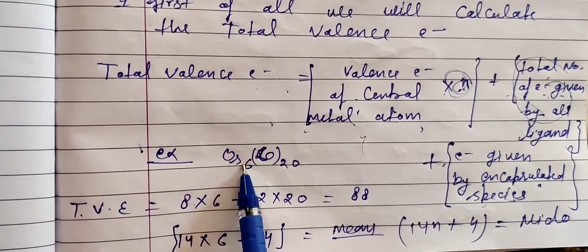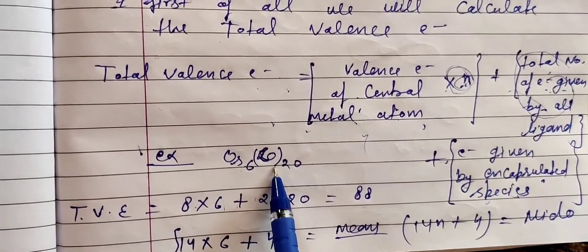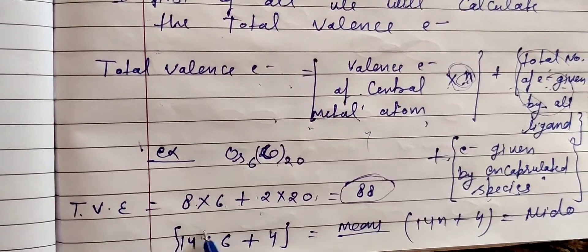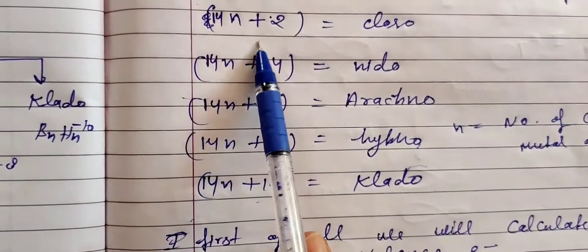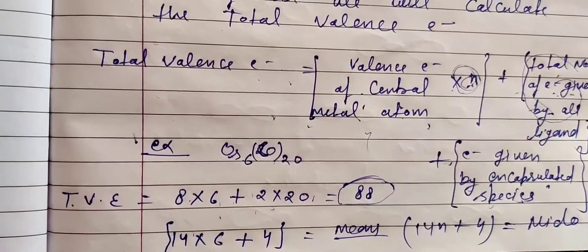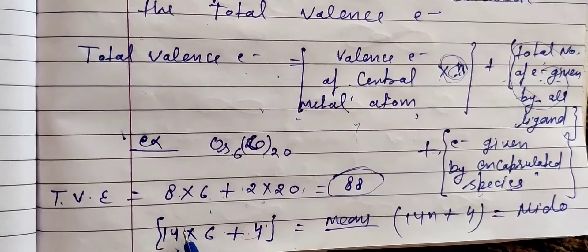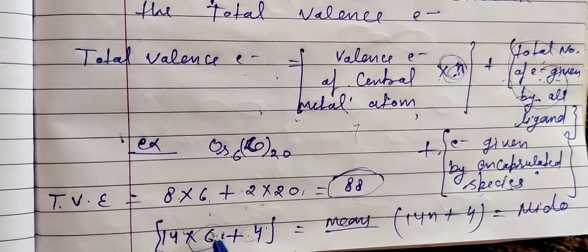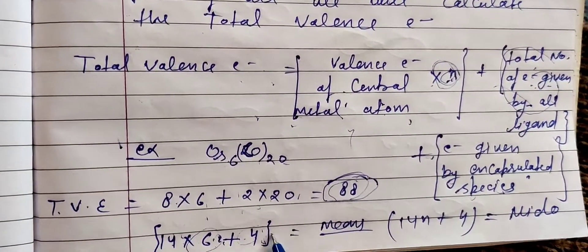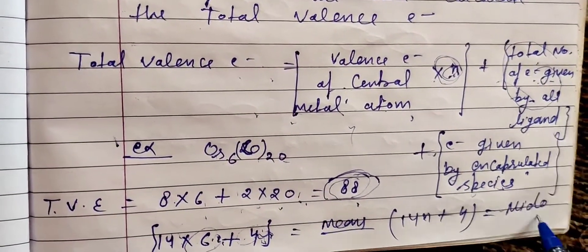Now apply the formula: 14×n where n = number of osmium atoms = 6, so 14×6 = 84. Subtract from 88: 88 − 84 = 4. So it is 14n+4, which means nido type borane. Next example: Ir4(CO)12. Iridium has 9 valence electrons, n=4, so 9×4 = 36. CO gives 2 electrons each: 2×12 = 24. Total = 60. Then 14×4 = 56; 60−56 = 4, so 14n+4, which is nido type borane.